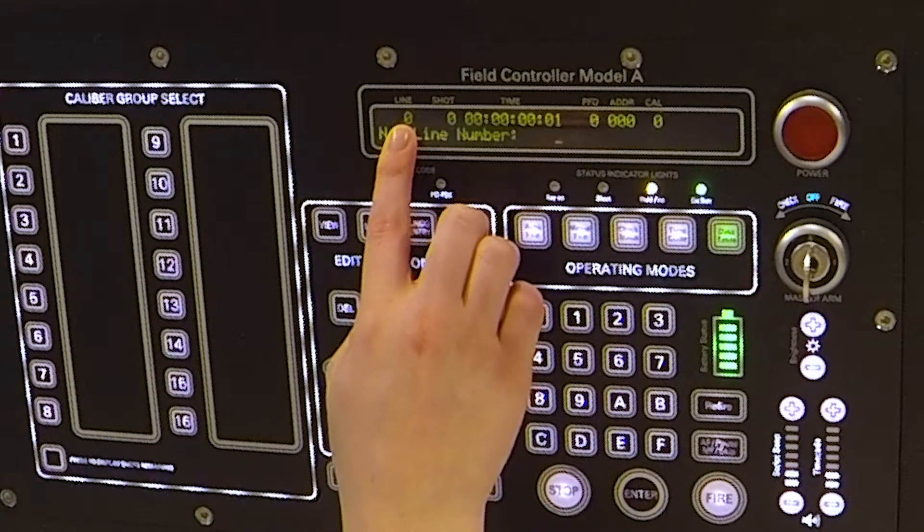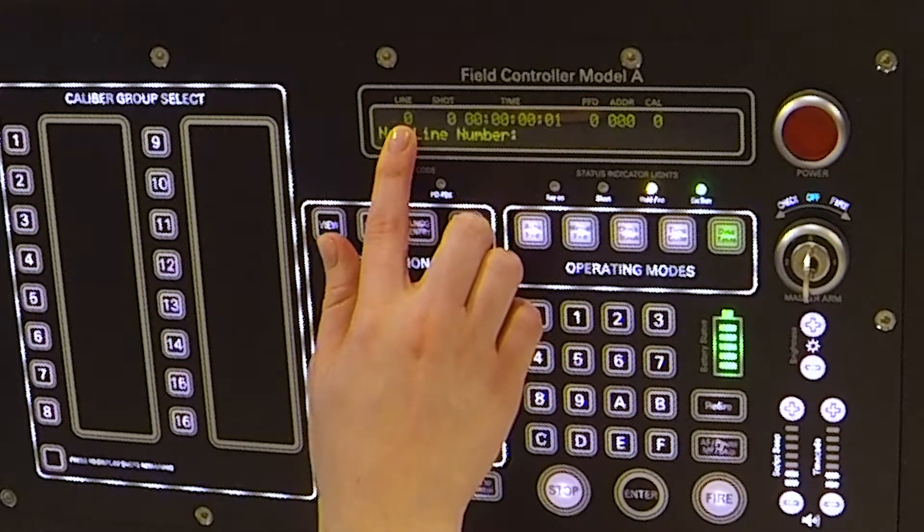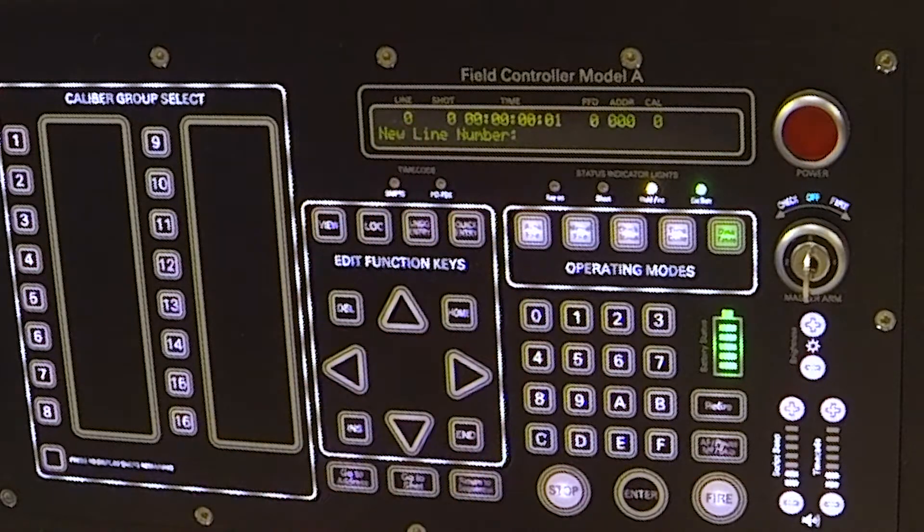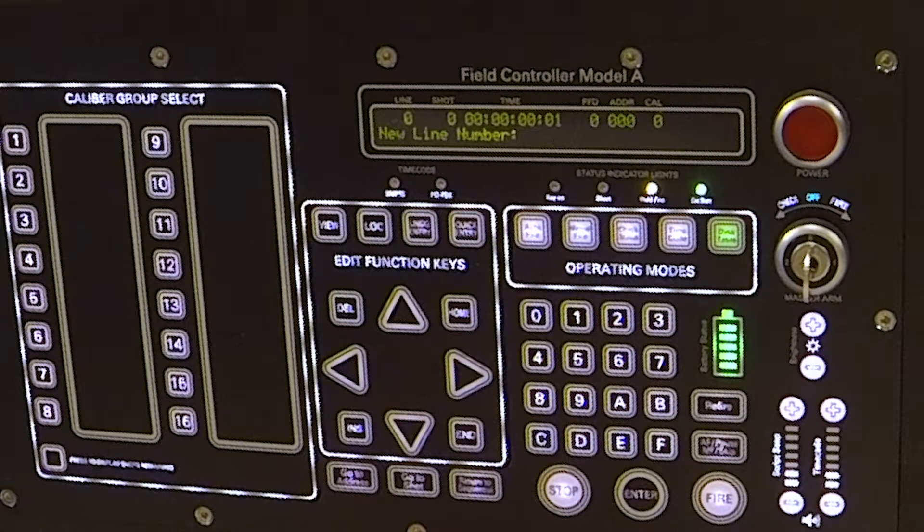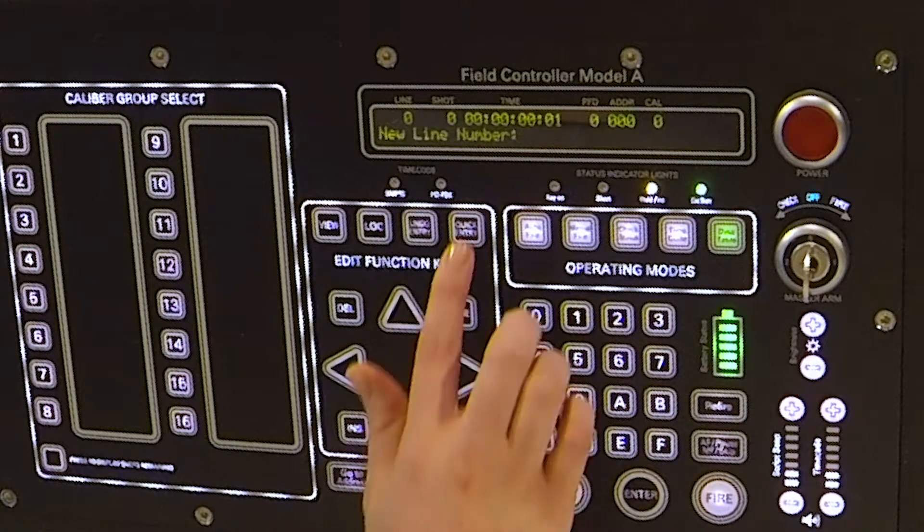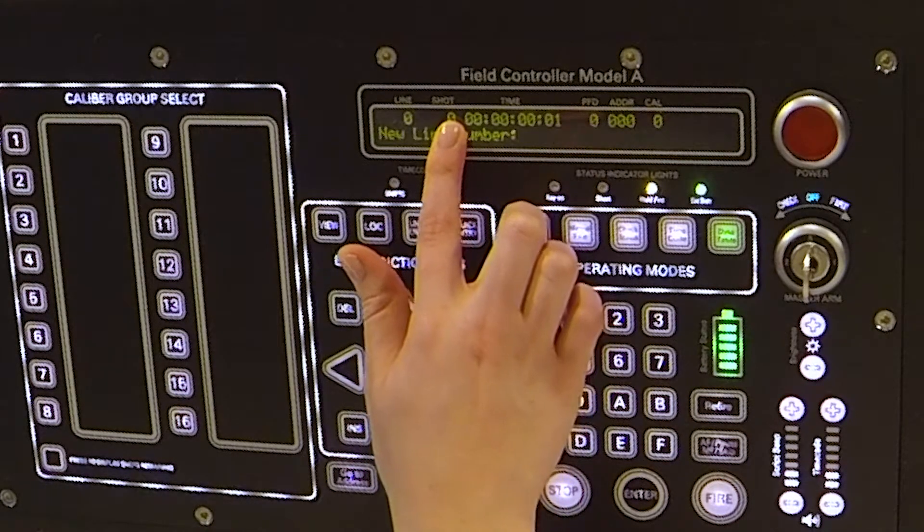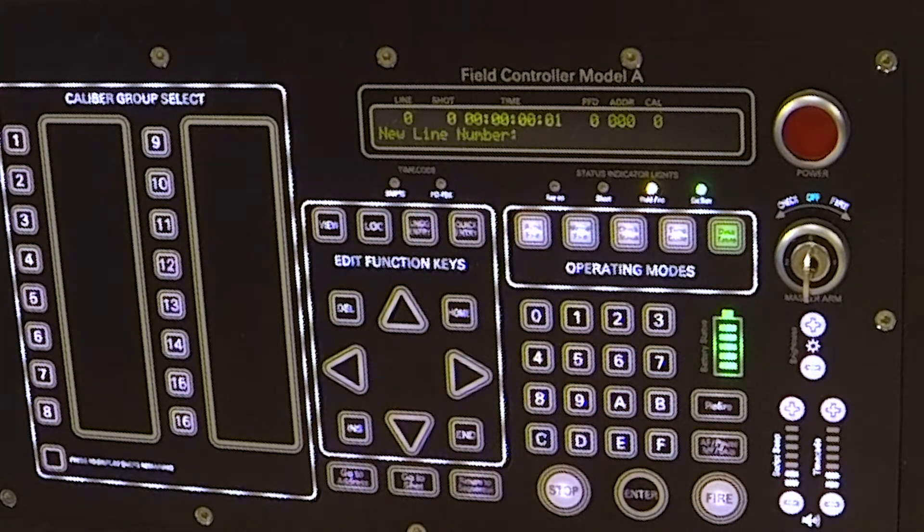The line number is just the index number of the script table. It's any number between 0 and 2500. The shot number is just for labeling. It does not affect your firing at all.